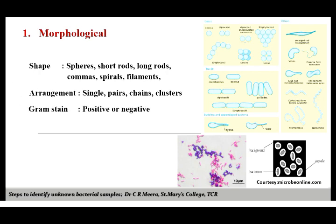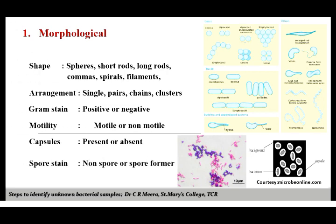The next step is a very important and crucial one which will differentiate bacteria into Gram-positive and Gram-negative — that is, the Gram staining procedure, the most common staining technique practiced in microbiology laboratories. After doing the Gram staining, we can look for special structures that may be present in bacteria, including the presence of flagella, which give the organism motility, or the presence of capsules.